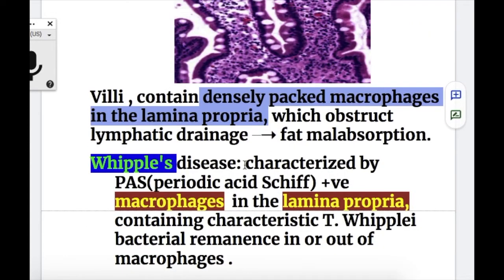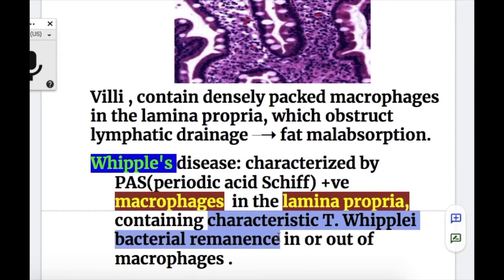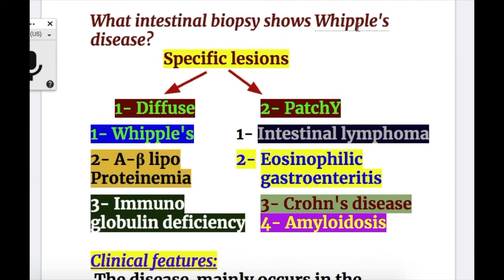Whipple's disease is characterized by PAS-positive (periodic acid-Schiff positive) macrophages in the lamina propria containing T. whipplei bacterial remnants in or out of the macrophages — the bacteria may be present inside or outside of the macrophages. Intestinal biopsy may show diffuse specific lesions and patchy specific lesions. The disorders that cause diffuse specific lesions are Whipple's disease, A-beta lipoproteinemia, and immunoglobulin deficiency.